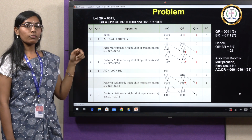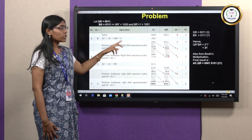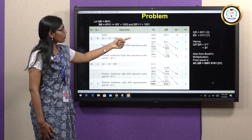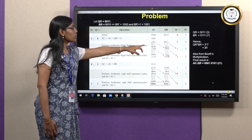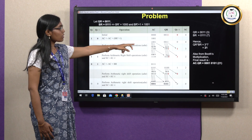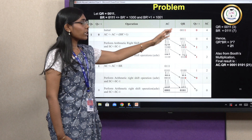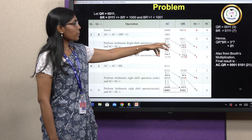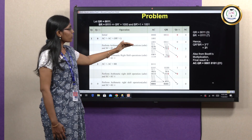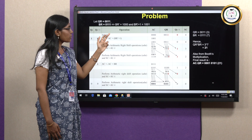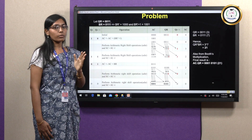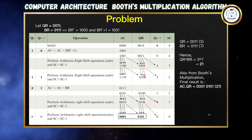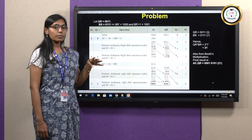After computing AC = 1001, the QR register remains 0011 and QN+1 remains 0, SC = 4. Now perform arithmetic shift right on AC and QR: the MSB is preserved and all bits shift one position right. After the shift, decrement SC from 4 to 3.